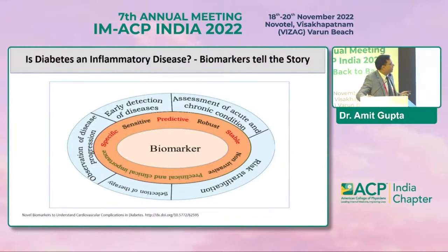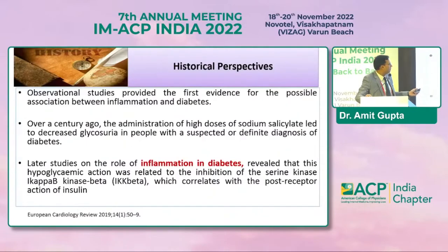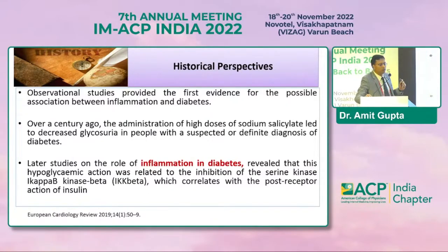Do biomarkers tell us anything? Inflammation can lead to type 2 diabetes. About a century ago, the administration of high doses of sodium salicylate led to decreased glycosuria in people with a suspected or definite diagnosis of diabetes. This was the first instance where it appeared that anti-inflammatory action can prevent diabetes.